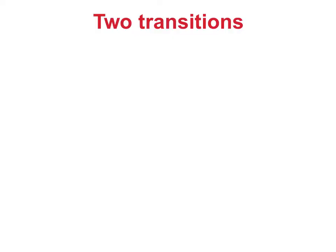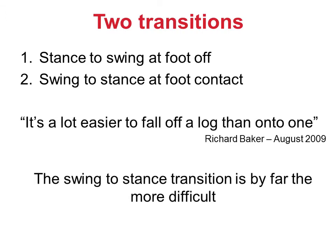There are two major transitions in the gait cycle: one between stance and swing at foot off, and the other between swing and stance at foot contact. Moving from stance into swing is relatively easy. Moving from swing to stance, however, is much more difficult. As I put it when delivering these lectures for the first time, it's a lot easier to fall off a log than onto one.